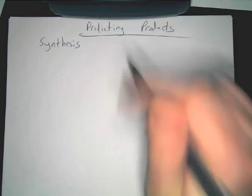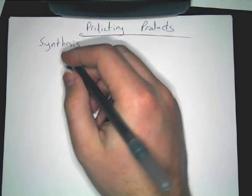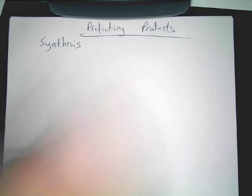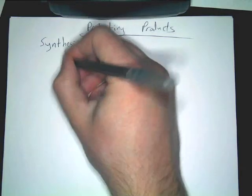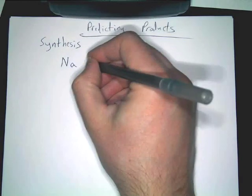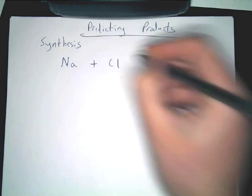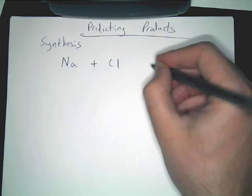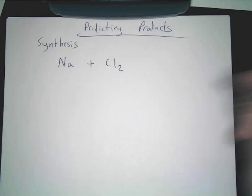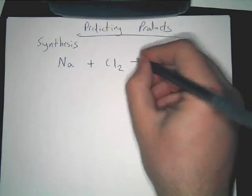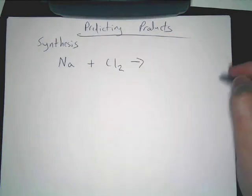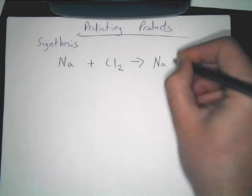This is the first type of reaction we're going to do. Synthesis is very basic and easy. We're going to keep it very short and simple. So you've got Na and Cl. Sodium plus chlorine gas react. What are they going to make? NaCl.